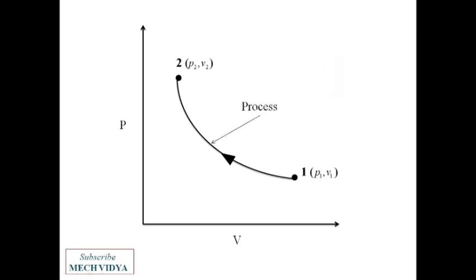Next, if the series of state changes are such that the system returns to its initial state—that is, the initial and final states are same—we get a cycle.